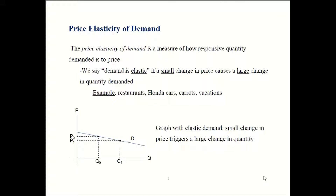We say demand is elastic if it's sensitive to price — in particular, if a small change in price gives you a big change in quantity demanded. One example is restaurants; people are often very sensitive to restaurant prices. If restaurant food gets more expensive, I'll just cook at home instead. Your book mentions Honda cars — if Honda tries to jack up their prices really high, you'll just buy a different brand. Or if carrots get expensive, we'll just substitute a different vegetable.